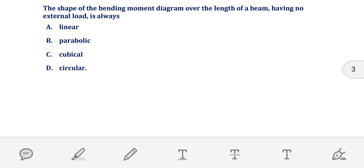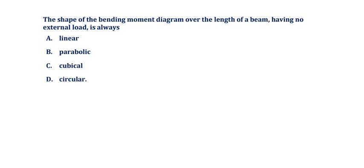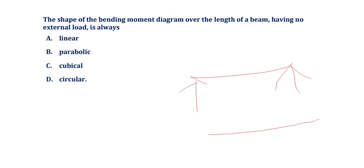The shape of the bending moment diagram over the length of a beam having no external load is always linear. So option A — linear — is the correct answer.